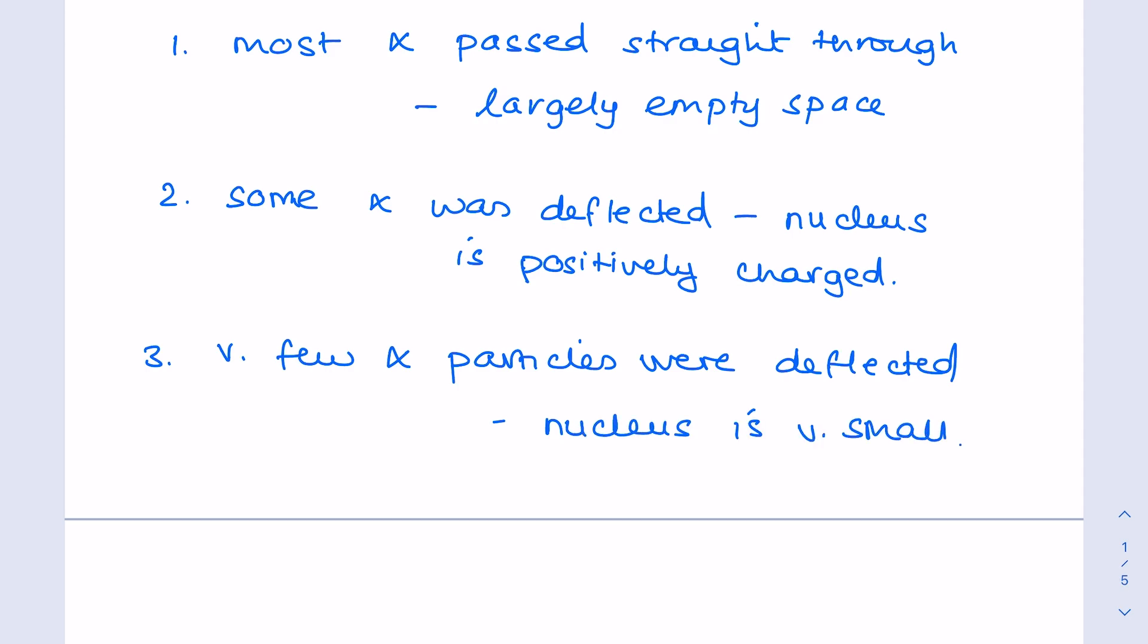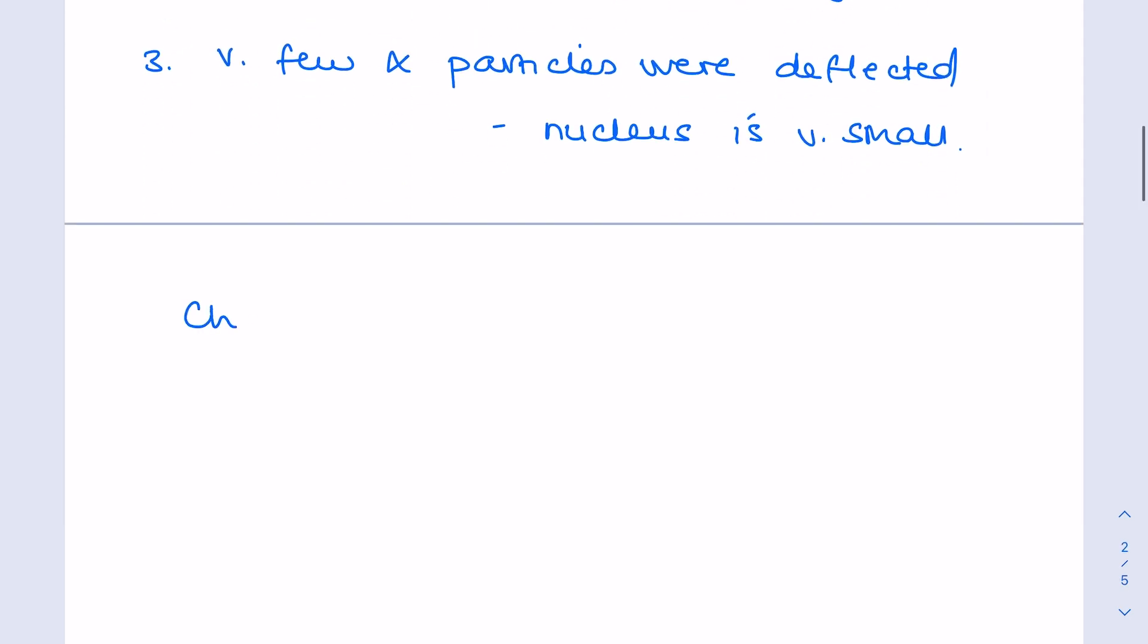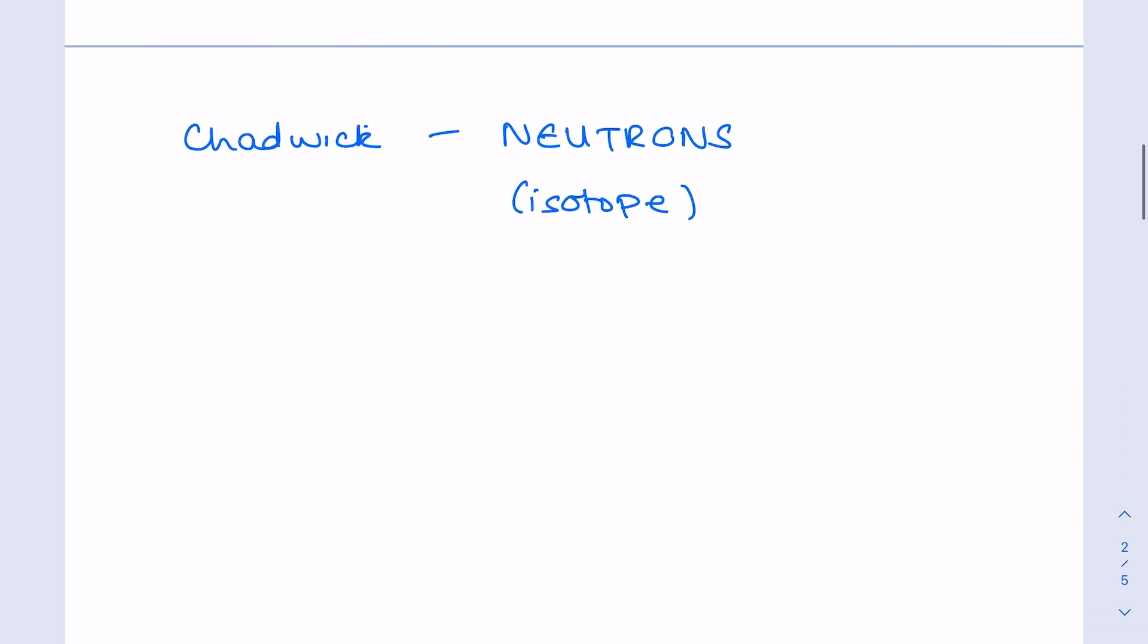A couple of other scientists you need to be aware of. Chadwick, who discovered neutrons. Please don't confuse these scientists. And therefore, he helped us understand what an isotope is. You do need to learn the definition of that, which is atoms of the same element with the same number of protons, but a different number of neutrons.